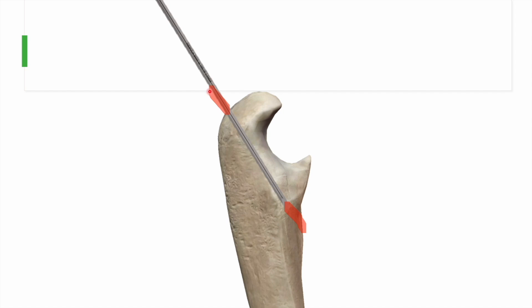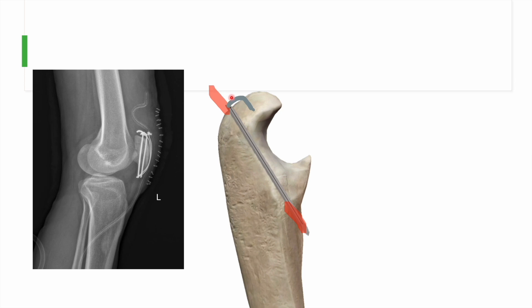After withdrawing the K-wire one centimeter, cut another centimeter of the wire with a sharp cut. Then, at that one-centimeter point, begin bending the wire approximately 180 degrees to create a hairpin bend. Once bent, this end is impacted back into the bone so there is no implant prominence, and the wire returns to being close to the cortex as required. The same step is then performed for the other wire.